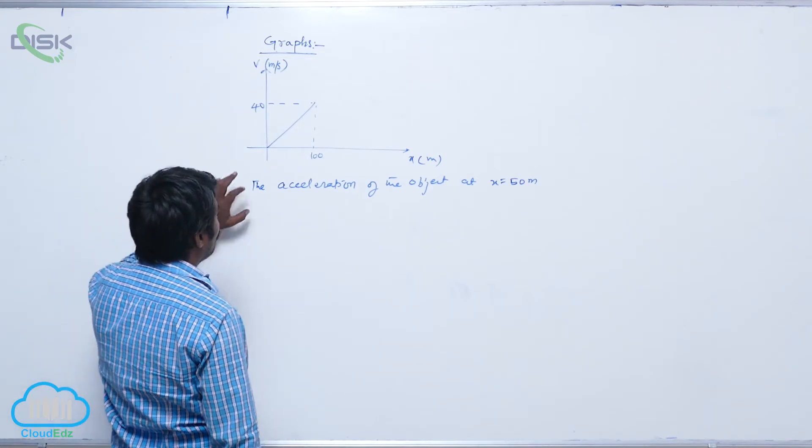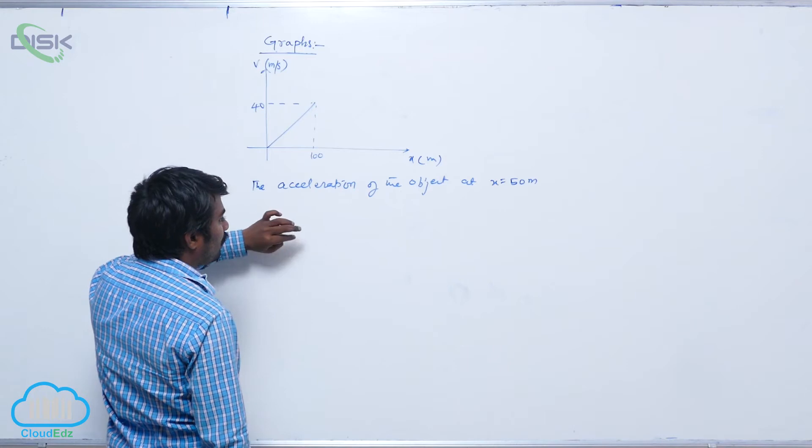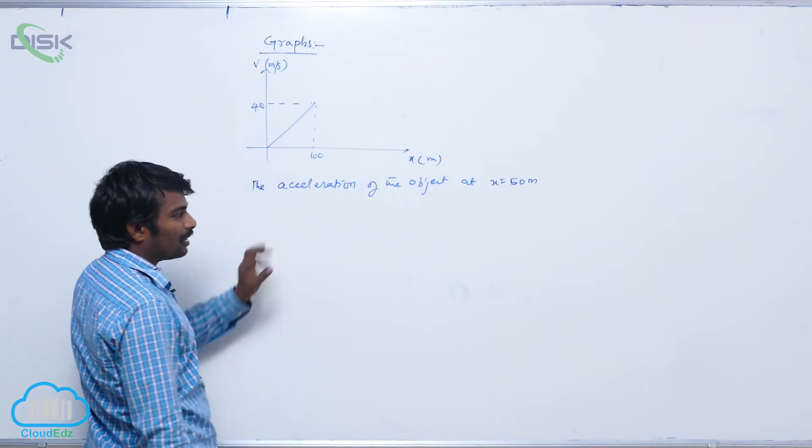From this graph, the acceleration equals dv by dt when velocity is a function of time, which we can calculate directly.